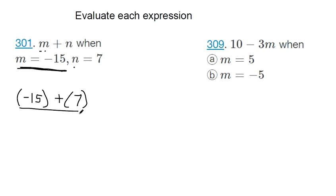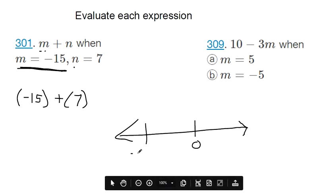Then I've got an addition problem and I'm done evaluating. I've just got to figure out what this is. So negative 15 plus 7, start with the number on the left, negative 15, then add 7 to it.